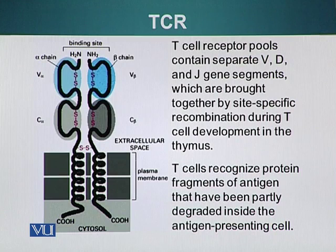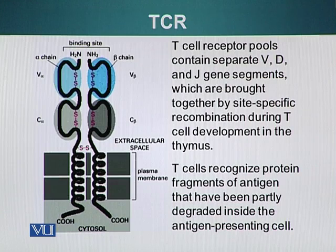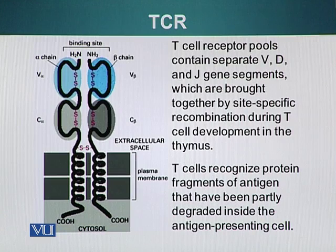The diversity of TCR molecules is generated by a similar process as we saw in the B cell receptor — how the variable region of the B cell receptor and antibodies is joined by different gene segments, resulting in diversity. The T cell receptor undergoes a similar process by joining different gene segments. The segments are V, D, and J segments, and their rearrangement occurs at the DNA level.